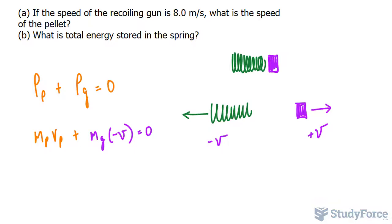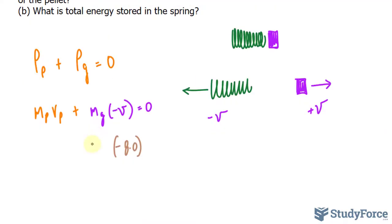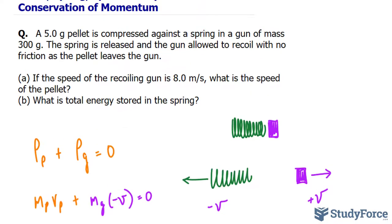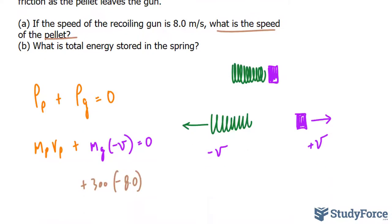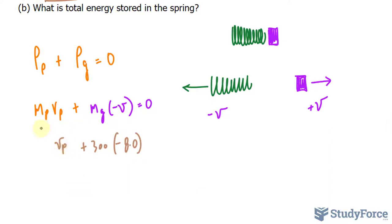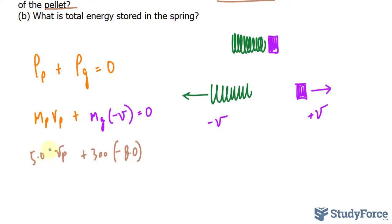Let's substitute all the values we know. So the speed of the gun is 8 meters per second. I'll replace this with negative 8.0 times the mass of the gun, which is 300 grams, plus the velocity of the pellet, that's what we're looking for, the speed. So I'll leave that blank. And the mass of that pellet was 5.0 grams.